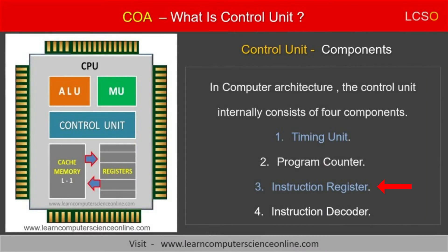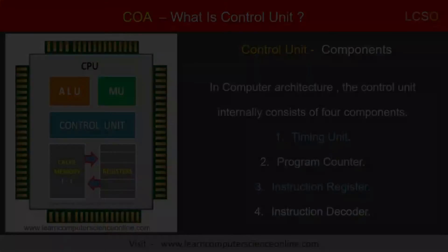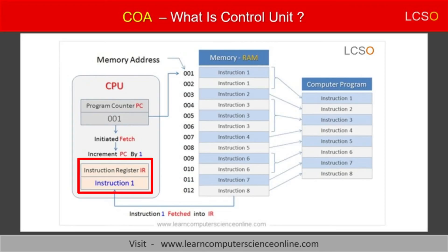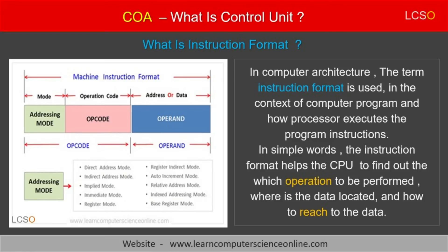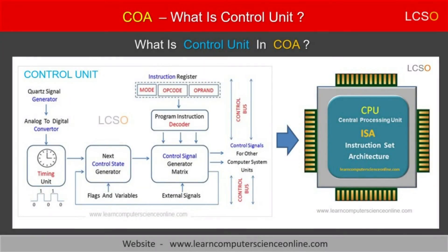The third internal component of the control unit is called the instruction register. In computer architecture, the instruction register IR is also alternately referred to as current instruction register CIR. The instruction register is a part of the control unit and it actually holds the current instruction that is being decoded and executed by the processor. During program execution, the instruction register is used to store the instruction fetched from the memory. The instruction format contains a group of bits that defines the layout of the instruction. The CPU decodes the operation code, called as opcode, from the instruction format, and the processor then executes the desired operation as per the instruction set architecture ISA.